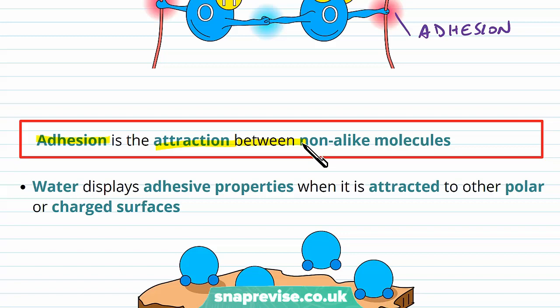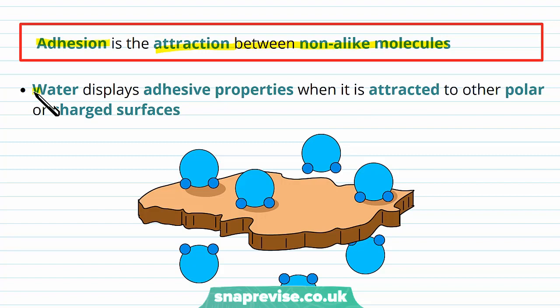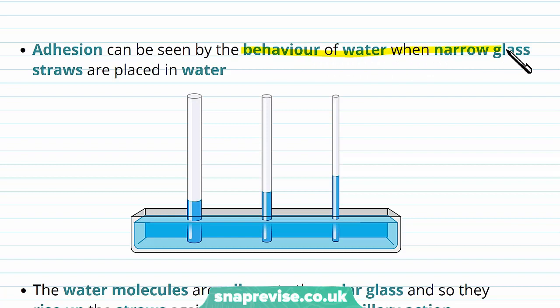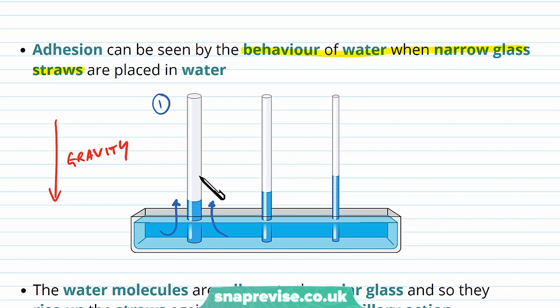Water shows these adhesive properties when it's in contact with another polar or charged surface. In order to be attracted to this surface, it must be polar or charged — water doesn't do this to non-polar surfaces. You can see this clearly with straws: the behaviour of water in a narrow glass straw shows adhesion. Water is actually sucked up the tube even though gravity is acting downward, and without any extra help. This is because the glass tube is polar — made up of polar molecules — and therefore the water gets attracted to it, in a force we describe as capillary action.